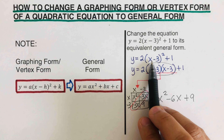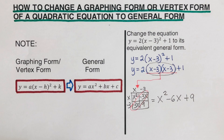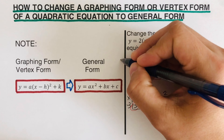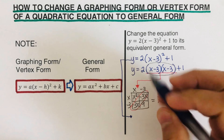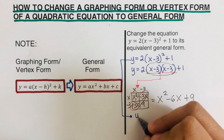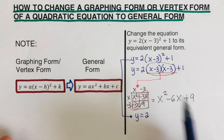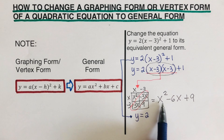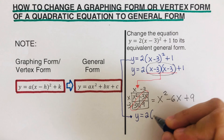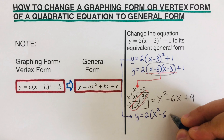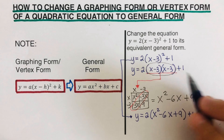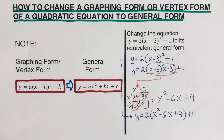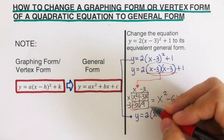We plug x squared minus 6x plus 9 back in for the squared term. The equation now looks like y equals two times the quantity x squared minus 6x plus 9, plus one. Now we distribute the two to each term inside the parentheses.